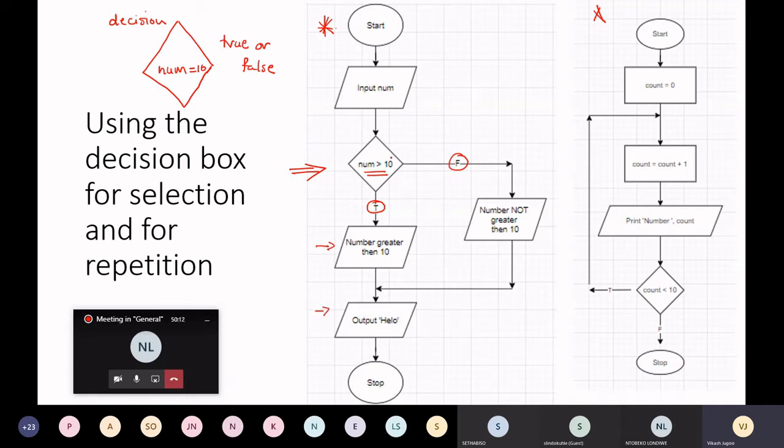But if the condition is false, then we come this way and we execute that statement, and then we come and execute this statement. This is what we discussed yesterday, right?